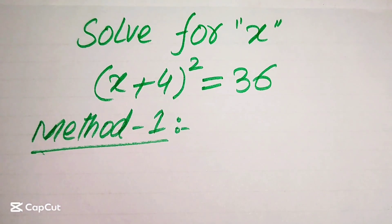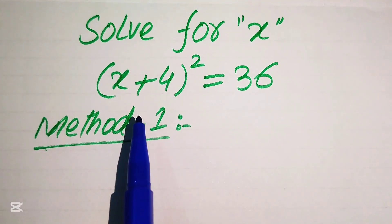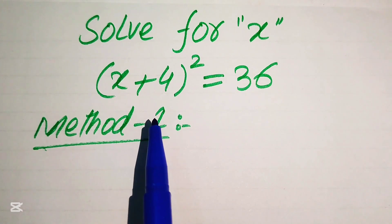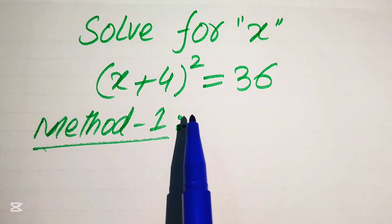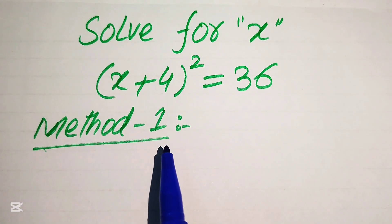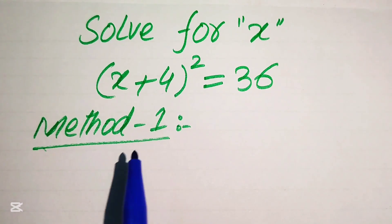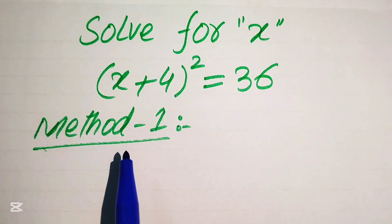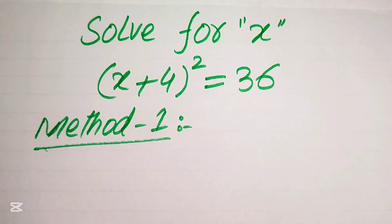Hello everyone, welcome. We will solve this math olympiad algebra problem. Here we have (x + 4)² = 36, and we will solve this problem for the values of x.